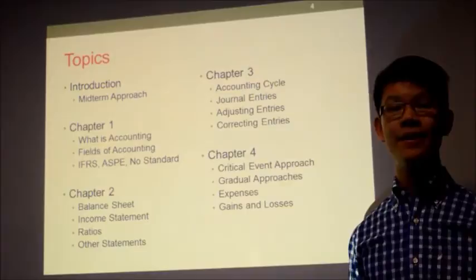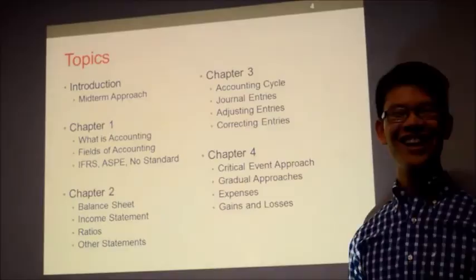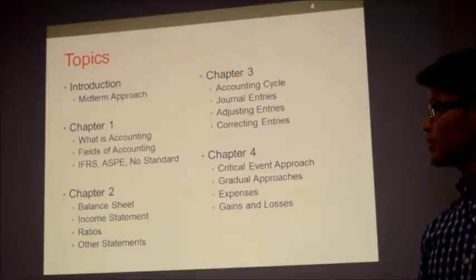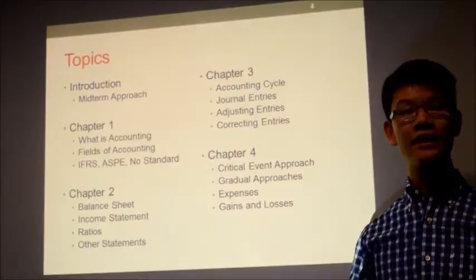In Chapter 3, we dive into the accounting cycle — debits and credits, journal entries, adjusting entries, and correcting entries. Chapter 4 covers income measurement, where we look at revenue recognition through the critical event approach, the gradual approach, expenses, as well as gains and losses on sales of things that the entity doesn't normally sell.